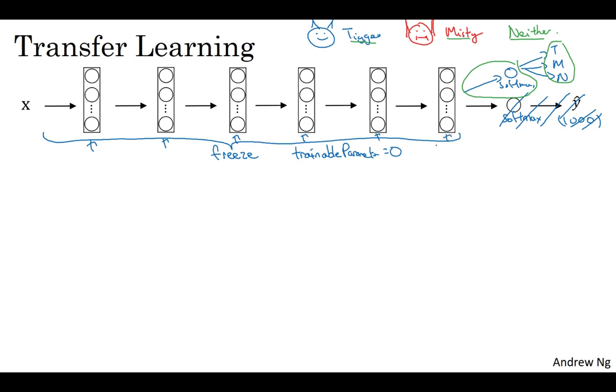You might set that for some of these earlier layers in order to just say don't train those weights, or sometimes you have a parameter like freeze equals one. And these are different ways in different deep learning programming frameworks that let you specify whether or not to train the weights associated with a particular layer. And so in this case, you would train only the softmax layer's weights but freeze all of the earlier layers' weights.